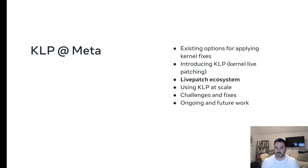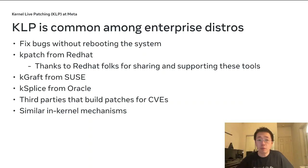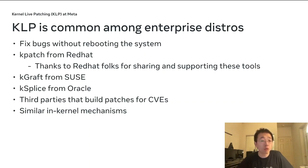Now that we've covered KLP, I'll hand it off to Song to talk about the ecosystem around live patch. KLP is actually pretty common among enterprise distros. The primary goal for enterprise users is to fix kernel bugs without rebooting the system. The most popular solutions are Kpatch from Red Hat, Kgraph from SUSE, and Ksplice from Oracle. There are also third-party solution providers who build patches for CVEs. Based on our knowledge, all these solutions have similar in-kernel mechanisms but different toolchains.